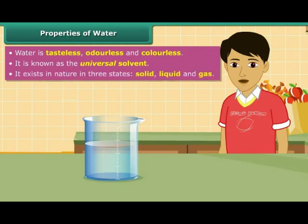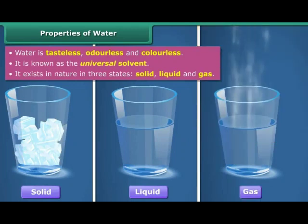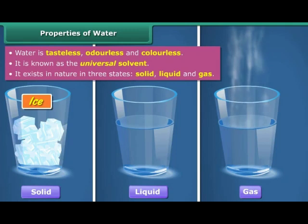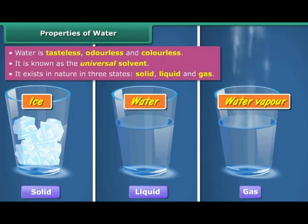Water exists in nature in three states — solid, liquid, and gas. In solid form, water is known as ice or snow. In gaseous form, water is known as water vapor or steam. But the most common form that water takes is the liquid form, and it is in this form that it is known as water.